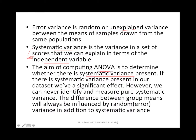If there is a systematic variance present in our data set, we have a significant effect. ANOVA just detects whether systematic variance exists — it's a yes or no answer without any specific figure. However, we can never identify and measure pure systematic variance, because the difference between group means will always be influenced by random or error variance in addition to systematic variance.